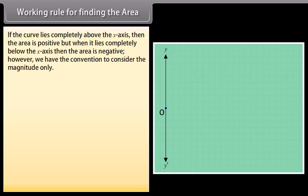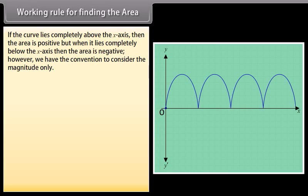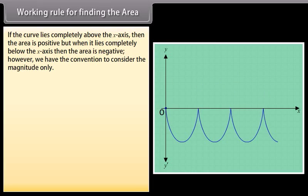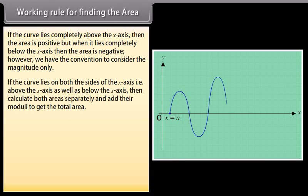If the curve lies completely above the x-axis, then the area is positive. But when it lies completely below the x-axis, then the area is negative. However, we have the convention to consider the magnitude only. If the curve lies on both sides of the x-axis — above as well as below — then calculate both areas separately and add their moduli to get the total area.